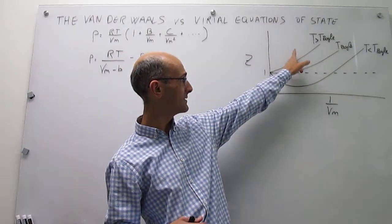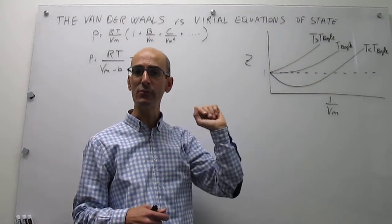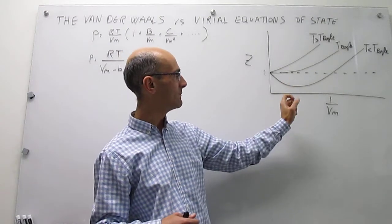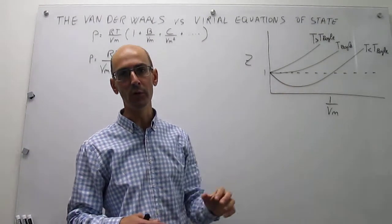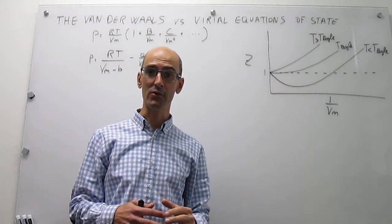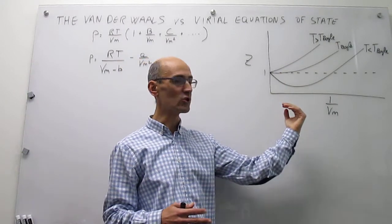If you have a temperature higher than the Boyle temperature, then repulsions dominate. If you have a temperature lower than the Boyle temperature of the gas, then attractions would dominate initially.